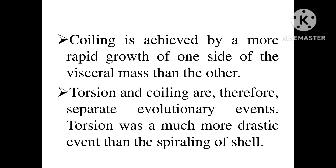Coiling is entirely different from torsion. Coiling is achieved by more rapid growth on one side of the visceral mass than the other. Therefore, torsion and coiling are separate evolutionary events. Torsion was a much more drastic event than the spiraling of the shell — torsion is far more important than coiling.